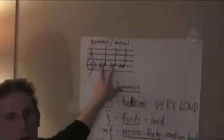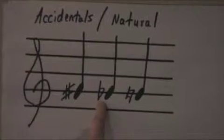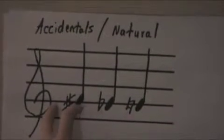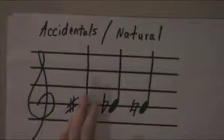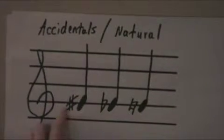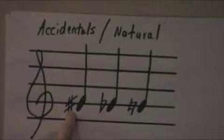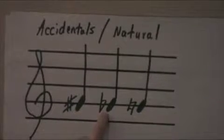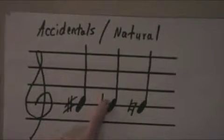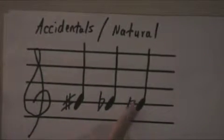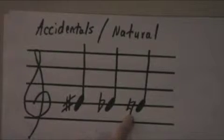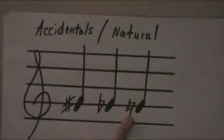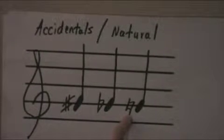Accidentals in music are the sharp and the flat. Sometimes you'll see double sharps and double flats, but let's just talk about these. Here's a sharp — it looks like a number sign — and the flat looks kind of like the letter B, and this is a natural sign.